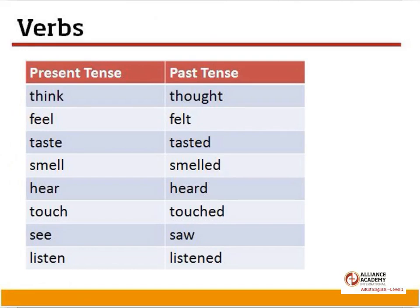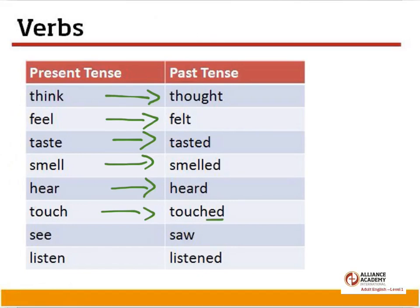Verbs that we need to know in the past tense: 'think' becomes 'thought' — that is irregular. 'Feel' becomes 'felt.' 'Taste' is 'tasted.' 'Smell' becomes 'smelled.' 'Hear' becomes 'heard.' 'Touch' becomes 'touched' — notice the t sound with the ch; when we have a ch and say it in the past tense, it sounds like a t: 'touched.' 'See' becomes 'saw,' and 'listen' becomes 'listened.'